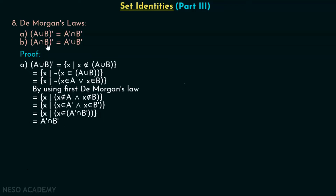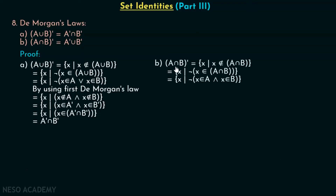Now we will prove A intersection B complement must be equal to A complement union B complement. From the definition, A intersection B complement is nothing but the set of all x such that x does not belong to A intersection B. We can replace x does not belong to A intersection B by not of x belongs to A intersection B. This can be replaced by x belongs to A and x belongs to B.